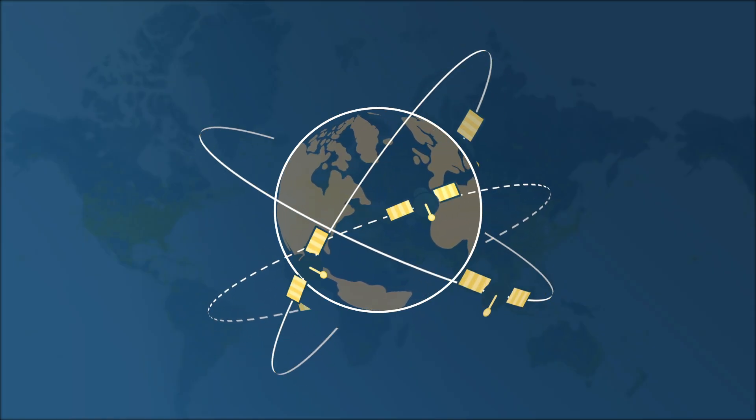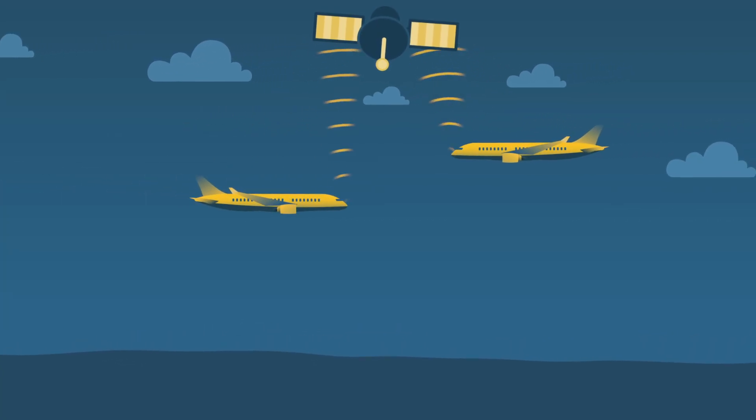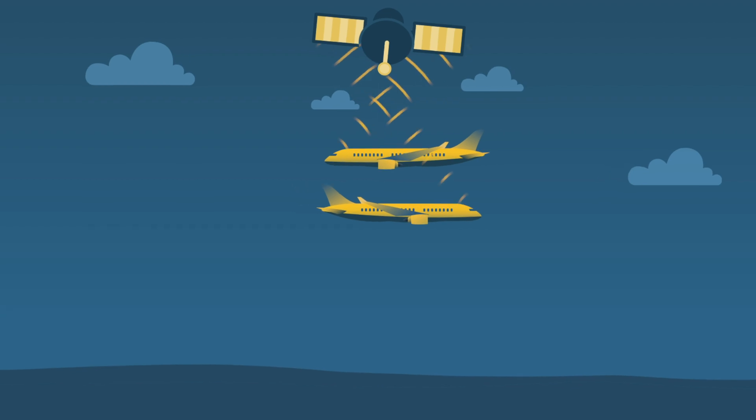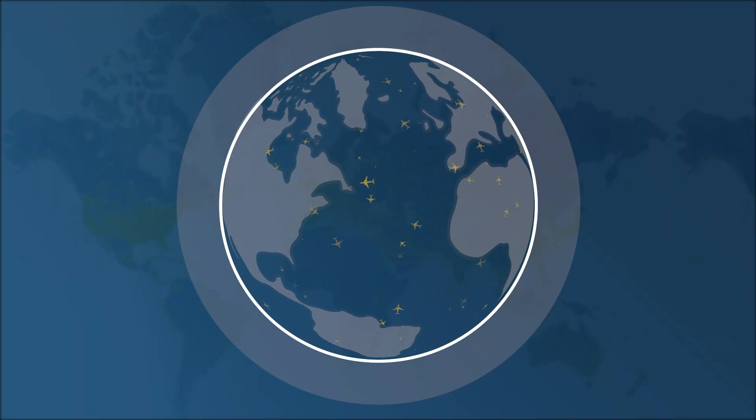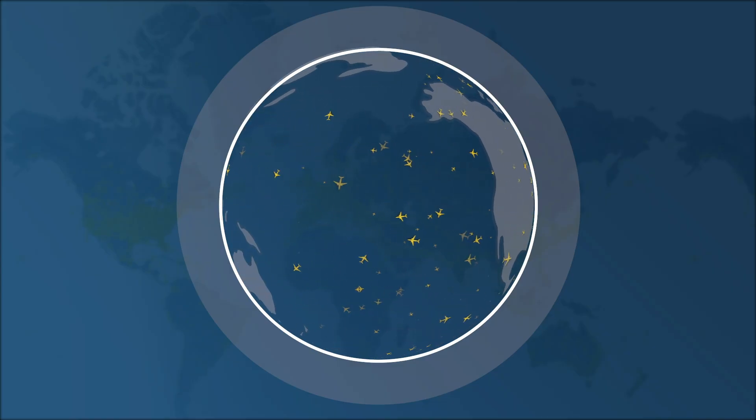Satellites equipped with ADS-B receivers collect data from aircraft outside our terrestrial ADS-B coverage area and send that data to the FlightRadar24 network. In general, satellite-based ADS-B increases coverage of flights over the ocean where ground-based reception is not possible.